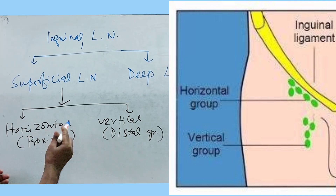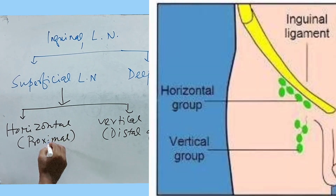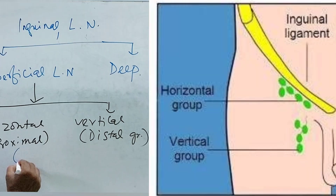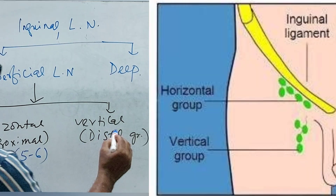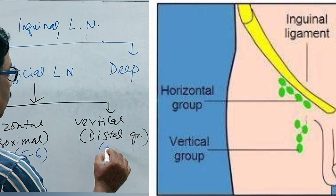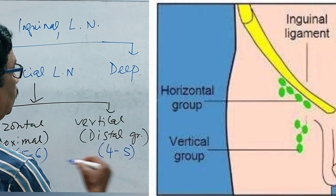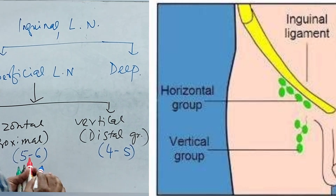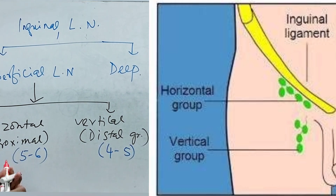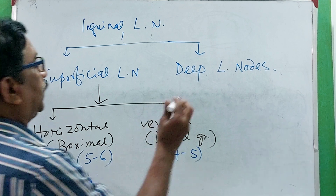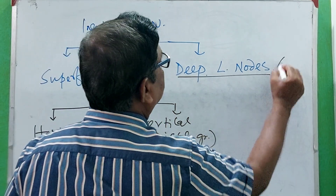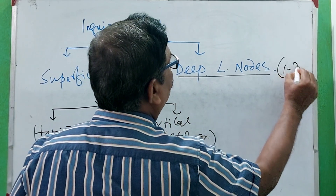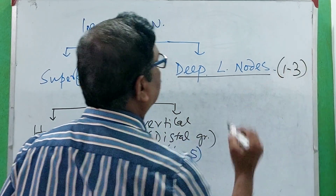The number of the proximal group of lymph nodes is usually 5 to 6, the vertical group is 4 to 5 in number, and the deep nodes are usually 1 to 3 in number.